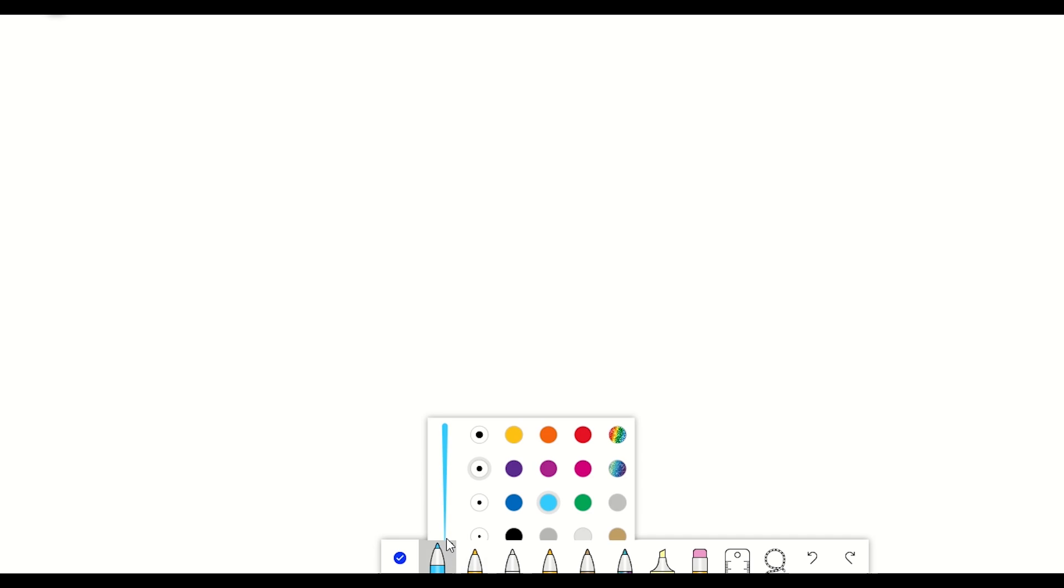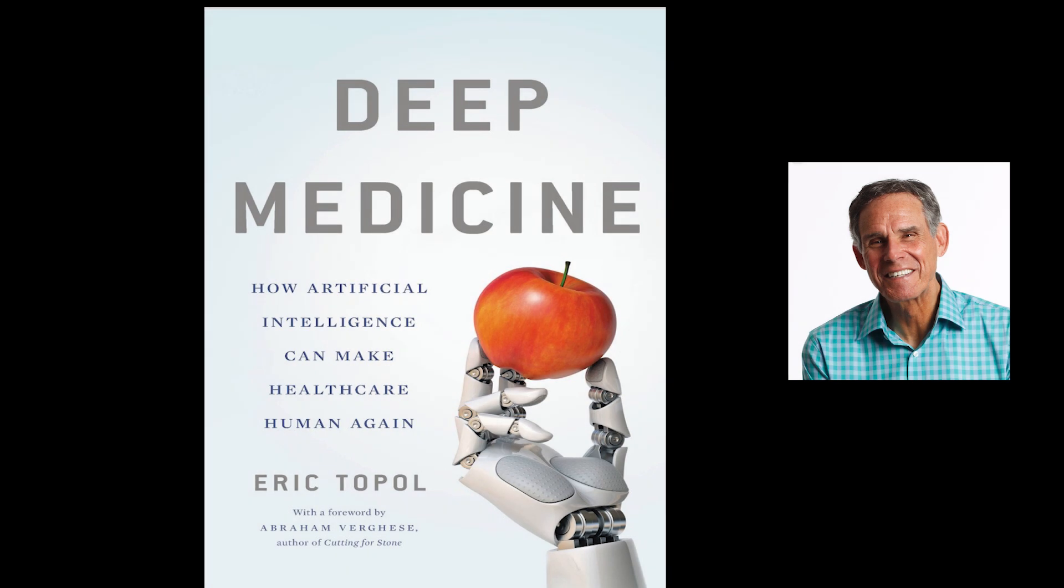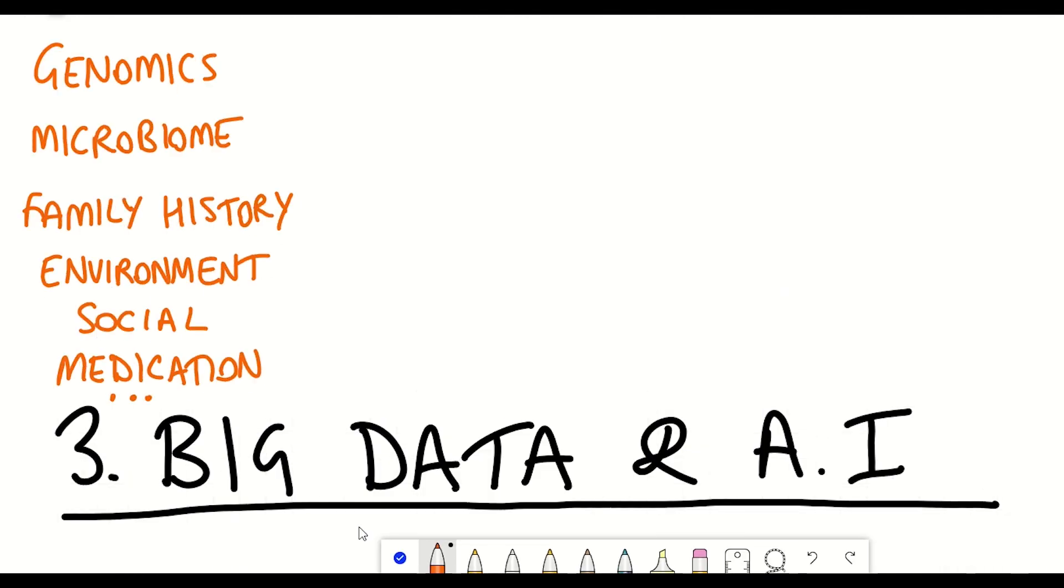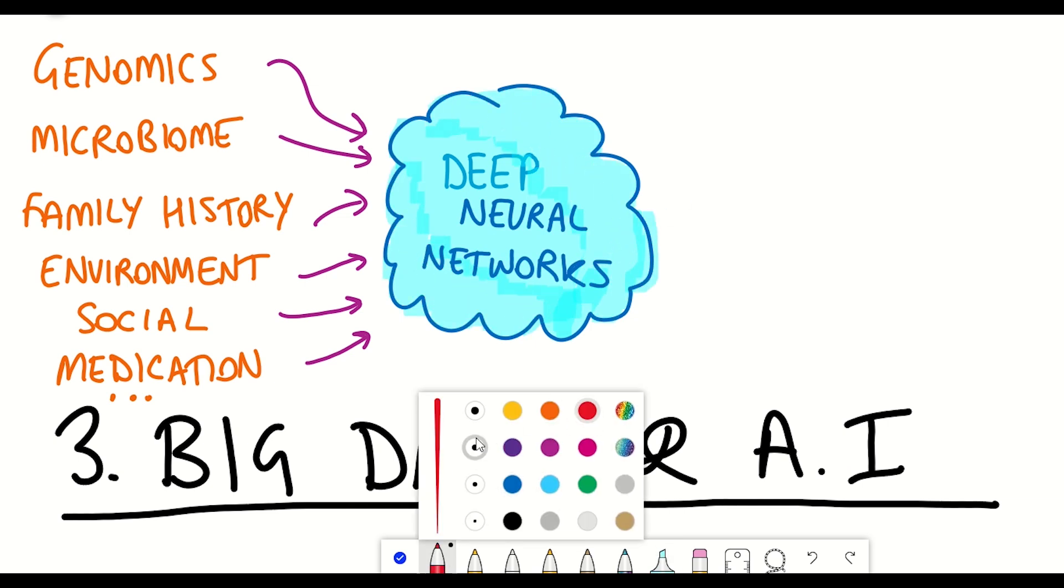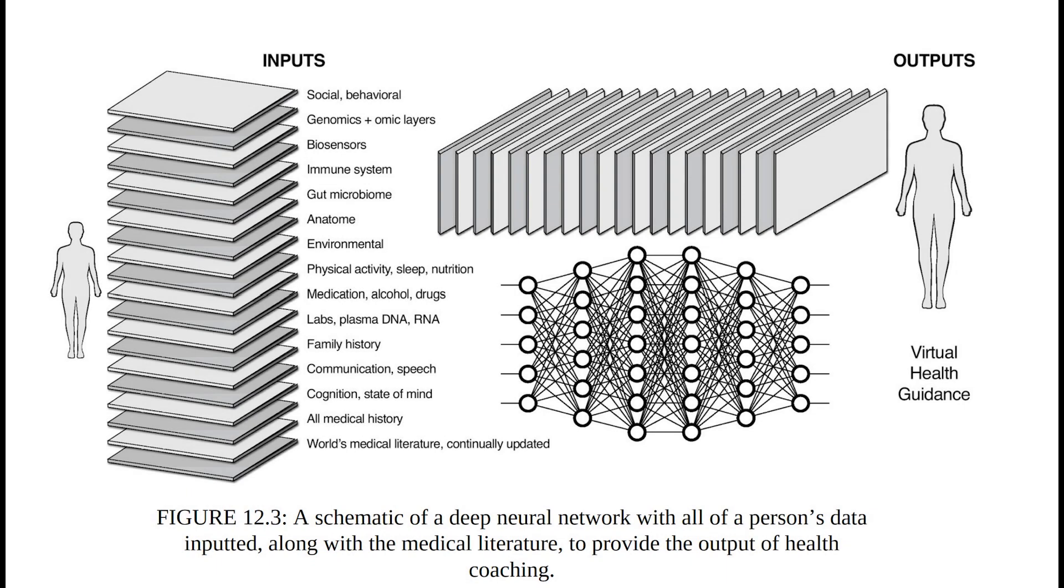So the third opportunity is big data and artificial intelligence. And if you've read Eric Topol's book, Deep Medicine, you'll know that artificial intelligence is going to be so important for integrating all of these big data sets in terms of delivering precision medicine. And out of these different artificial intelligence approaches, deep machine learning and deep neural networks will play an important role in being able to integrate the different layers of information that can be gathered for each individual.